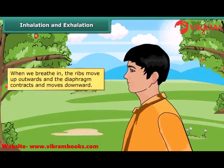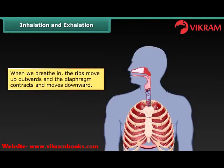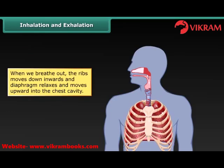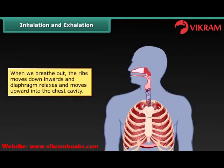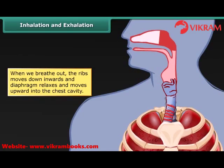When we breathe in or inhale, the ribs move up and outwards and our diaphragm moves downward. This increases the space in our chest cavity into which our lungs expand. As our lungs expand, air is sucked in through our nose or mouth, and the air travels down the trachea into our lungs. When we breathe out or exhale, our ribs move down and inwards and our diaphragm relaxes and moves upward into the chest cavity. As the space in the chest cavity gets smaller, air rich in carbon dioxide is forced out of our lungs and windpipe and then out of our nose or mouth.